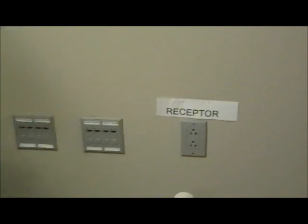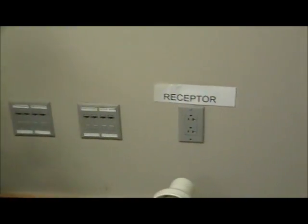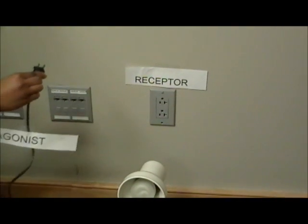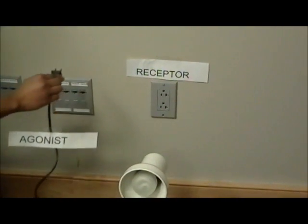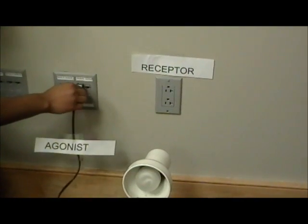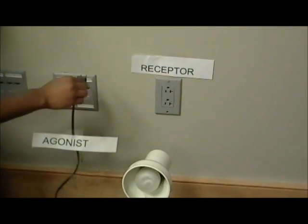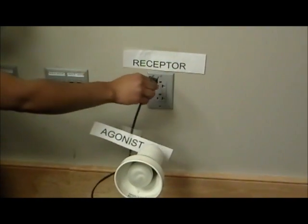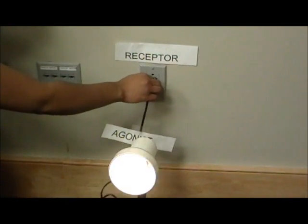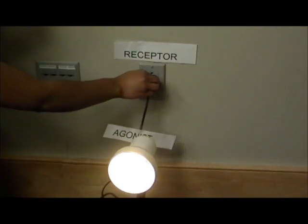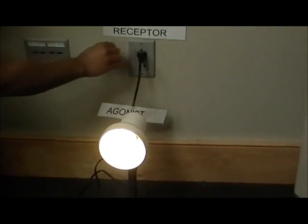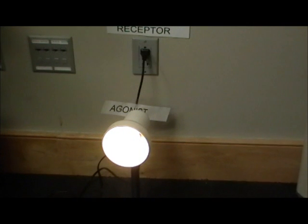Next comes the agonist. The agonist is a medication, hormone, or enzyme that can mimic the receptor activity regulated by endogenous compounds. Angiotensin II is an example of a naturally occurring agonist that, when it binds to the cell, causes narrowing of the blood vessels and increases your blood pressure.